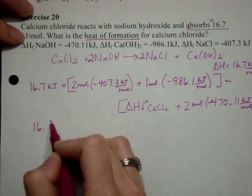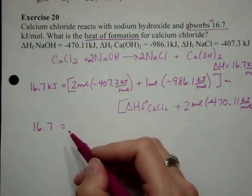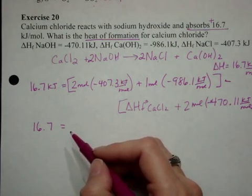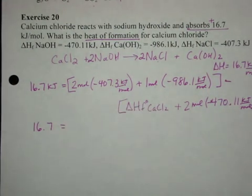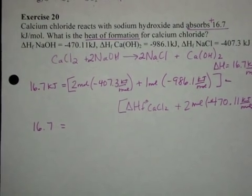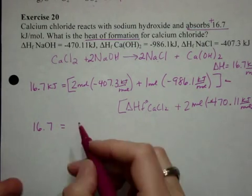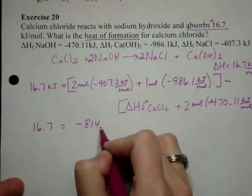All right, so then you end up with 16.7 equals... 2 times negative 407.3, which is negative 814.6.